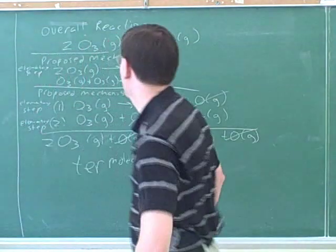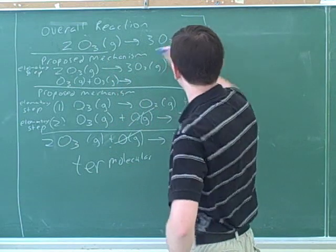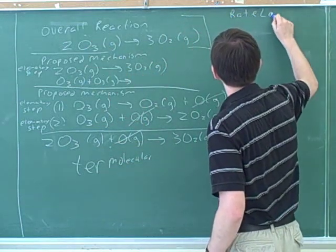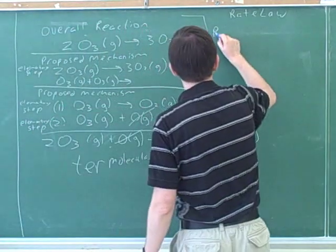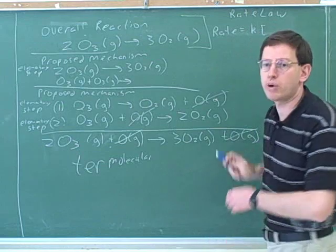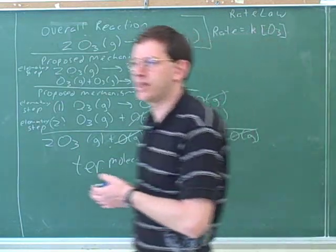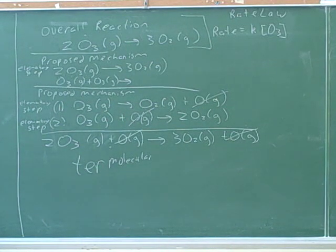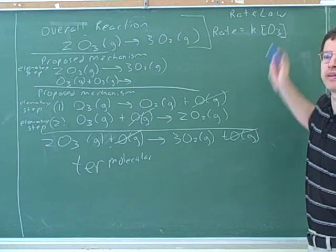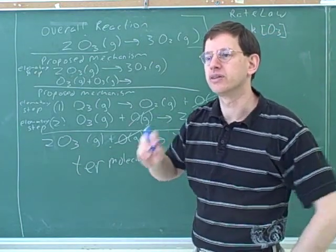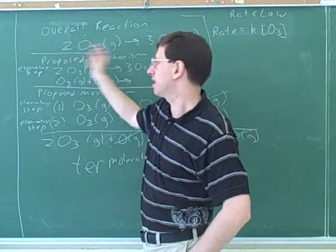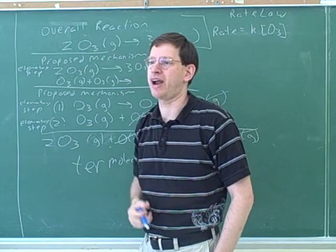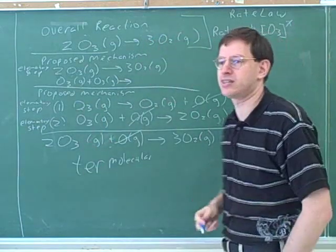Now let's talk about rate laws and try to write down the rate law for our overall reaction. The suggestion is k times the concentration of O3 raised to some exponent. You cannot figure out what the exponent for the rate law is from the coefficients of the overall reaction. We have to call it x — some variable — because the exponent is unknown from the balanced equation alone.